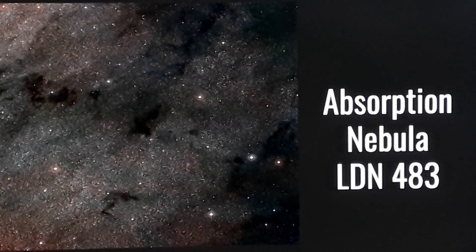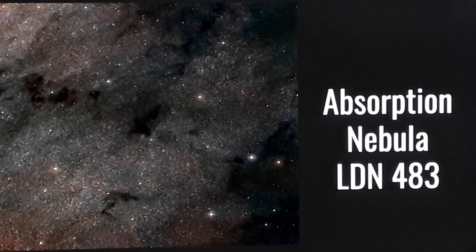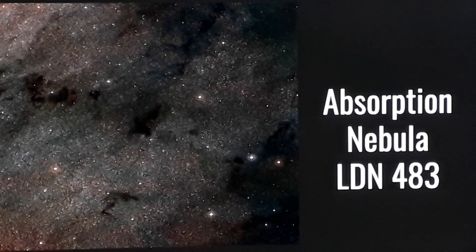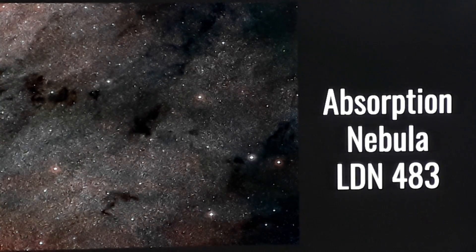Now let's see what are absorption nebulas. Absorption nebulas do not emit their own light or reflect other stars' light. Instead, they absorb light. These kind of absorption nebulas are made up of thick layers of gas and dust, and they are not visible through the naked eye or even through very large telescopes.